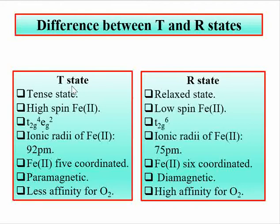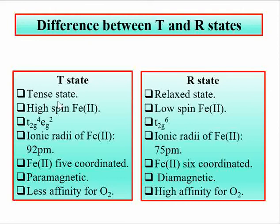The T state of hemoglobin is also called the tense state, and this is the deoxy form of hemoglobin. The R state, or relaxed state, is the oxy-hemoglobin form. In the T state, the iron center of the heme is high spin because it is deoxy-hemoglobin.